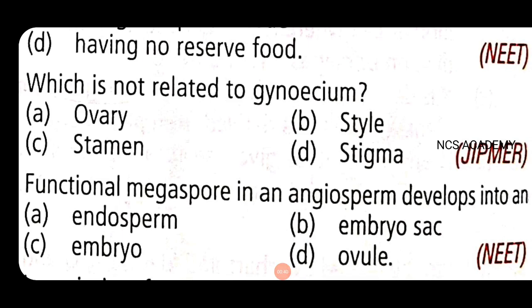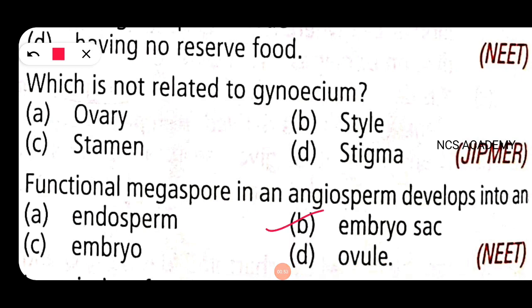Next, an important question on gynoecium: the functional megaspore in an angiosperm develops into an embryo sac. In angiosperms, the functional megaspore is the first cell of the female gametophyte. It enlarges and undergoes a few mitotic divisions to form an embryo sac. So the right option is embryo sac.